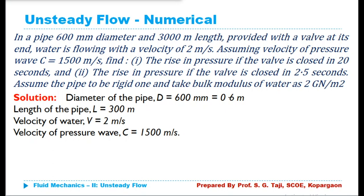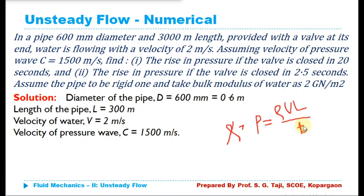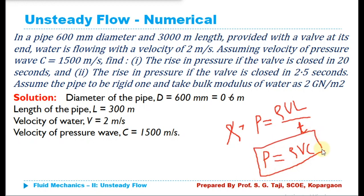We have considered two cases: when the valve is closed gradually and when it is closed suddenly. In case of gradual closure, the equation for pressure wave intensity is P = ρVL/T, where V is velocity, L is the length of pipe, and T is the time taken to close the valve, with P in Newton per meter square. In case of instantaneous closure, the equation is P = ρVC, where C is the velocity of the pressure wave.